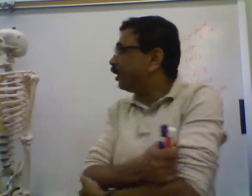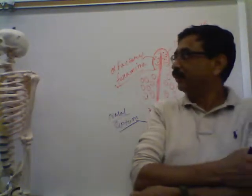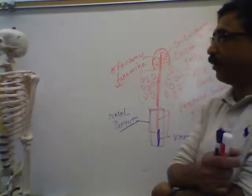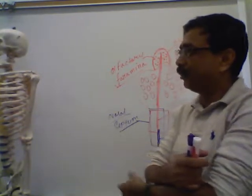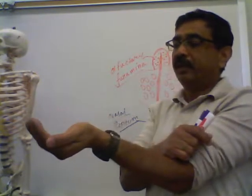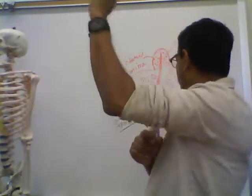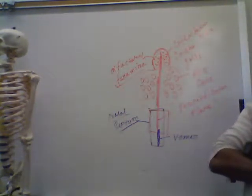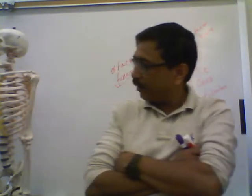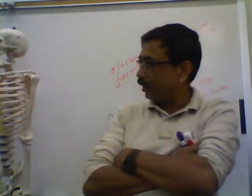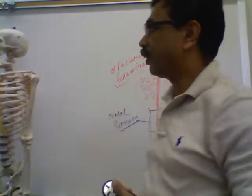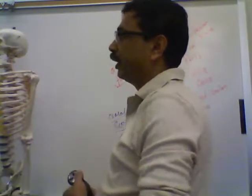The sphenoid is shown in red with greater wings, lesser wings, foramen ovale, and optic canal. On the body, you have the hypophysial fossa for the pituitary gland. In the back part, you see the occipital bone with the foramen magnum — the largest foramen — for the spinal cord to exit.